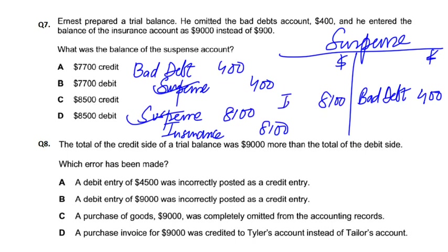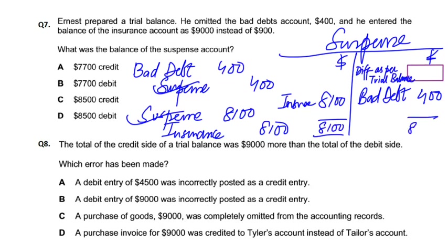Insurance. Now tell me which side is short — debit or credit? The credit side is short. As per the trial balance difference, the credit side is short by $8,100 minus $400 equals $7,700. So the suspense account opening balance is $7,700.